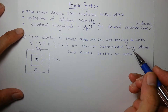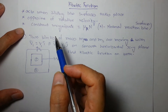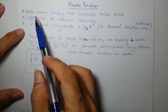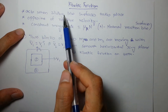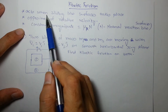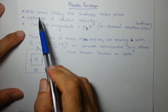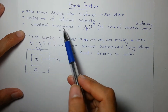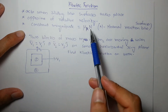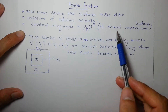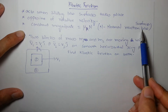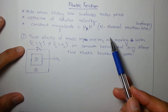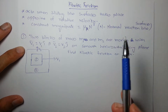In this video I'll talk about kinetic friction. When sliding takes place between surfaces, it acts in the direction opposite to relative velocity. Its magnitude is constant: μk·N, where N is the normal reaction between the surfaces on which you are applying the force of friction.